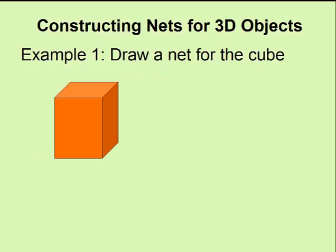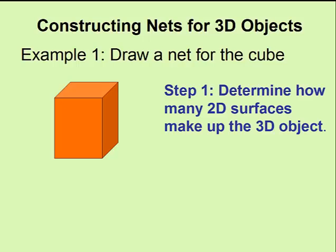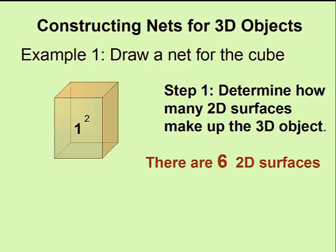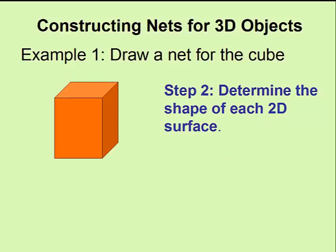In example one, we'll draw a net for the cube. We will generalize our procedures so we can come up with a set of steps that will work for finding the net of any three-dimensional object. You always want to determine how many two-dimensional surfaces are on your three-dimensional object. We have the front and back, the top and bottom, the right and left side. So there are six two-dimensional surfaces.